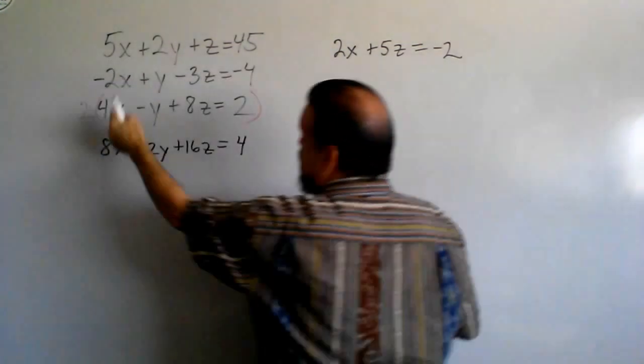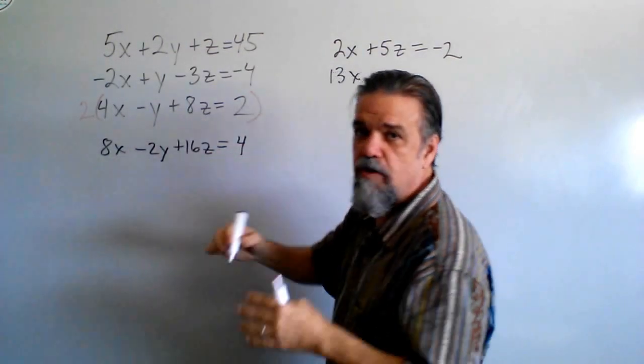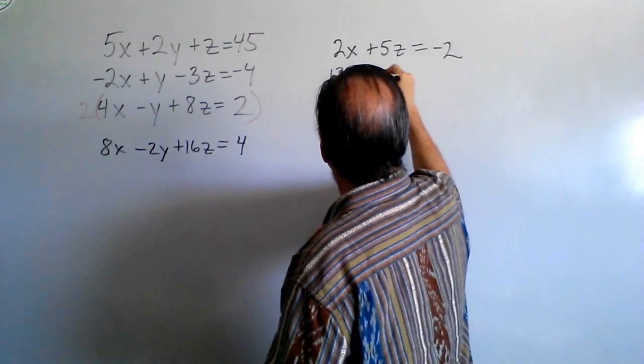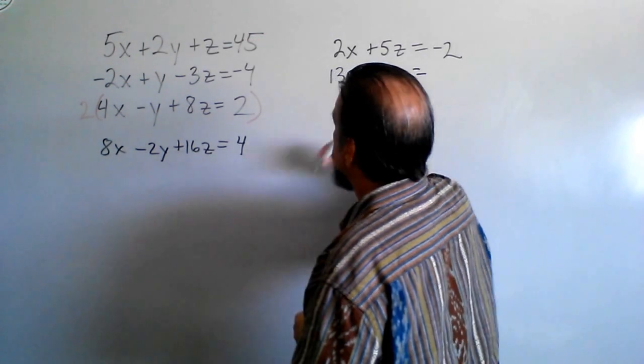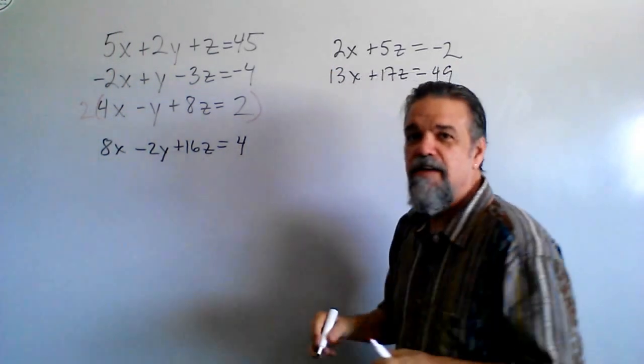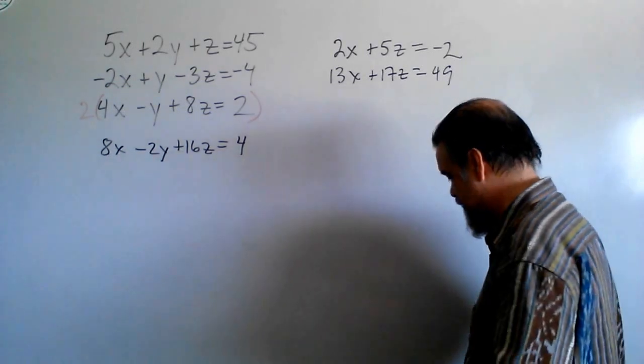And so that's going to give me 5x plus 8x is 13x, 2y minus 2y, those take care of each other, and z plus 16z is plus 17z, and that equals 45 plus 4 is 49. So, now I have a 2 by 2 system that I know how to solve, so now I'm real happy.